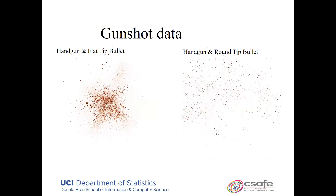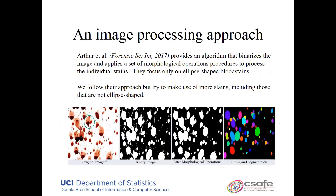Here are a couple of examples of bloodstain patterns generated by this impact setup — one from the hockey puck and one from the cylinder. You can see that though both are impact events, they actually have different looks, which is part of what complicates the task. The gunshot data setup, as you might expect, is significantly more complicated and requires a great deal of care.